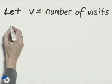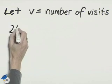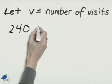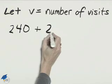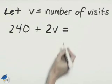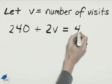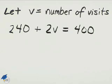So our equation will be the cost per year plus $2 times each visit. If V is the number of visits, it's going to be 2V, equals the total cost which he wishes to spend, equals $400.